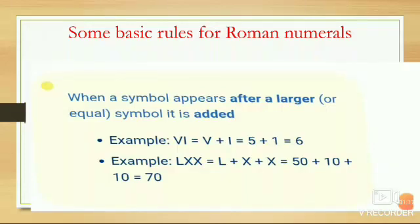Some basic rules for Roman numerals. When a symbol appears after a larger or equal symbol, it is added. Example: VI equals to, in Roman, 5 plus 1, which is equal to 6 in Hindu Arabic.